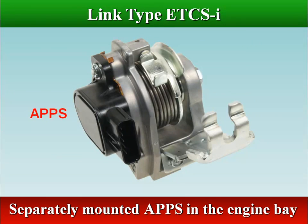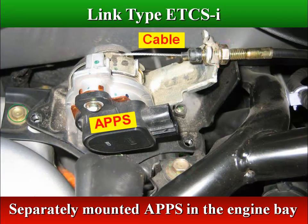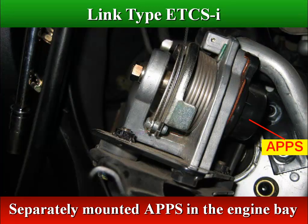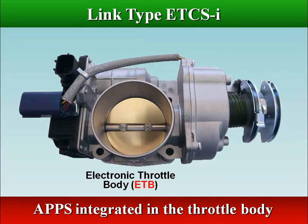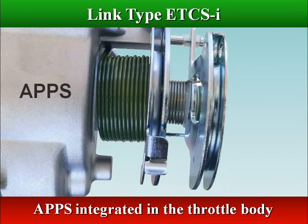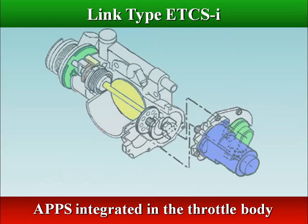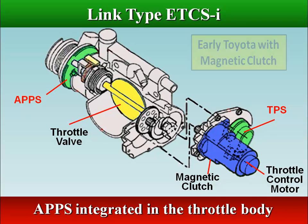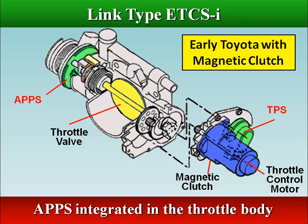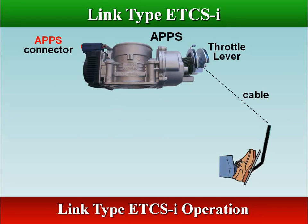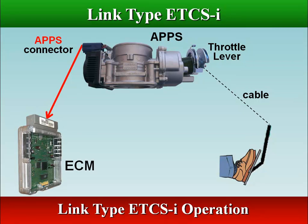The accelerator pedal position sensor has been mounted in the engine bay and is manually operated by the cable. The accelerator pedal position sensor mounted on the throttle body is integrated with the throttle lever, and the throttle lever is connected by cable to the accelerator pedal. Depending on the vehicle make, these throttle body types may incorporate a magnetic clutch to connect the throttle control motor with the throttle valve. As the driver moves the accelerator pedal, the accelerator pedal position sensor signal voltage to the ECM changes, indicating a new pedal position.